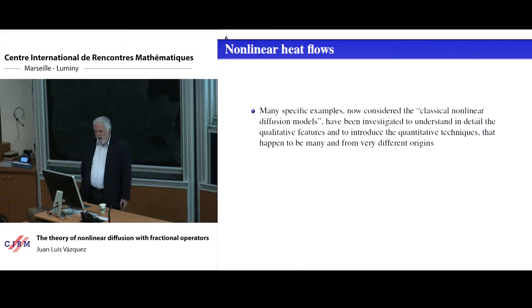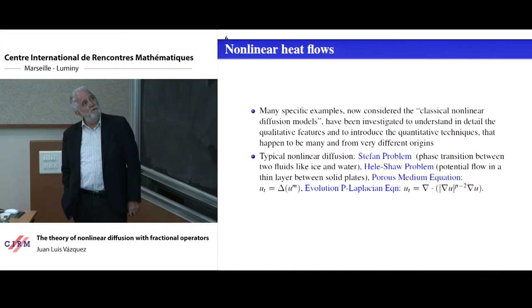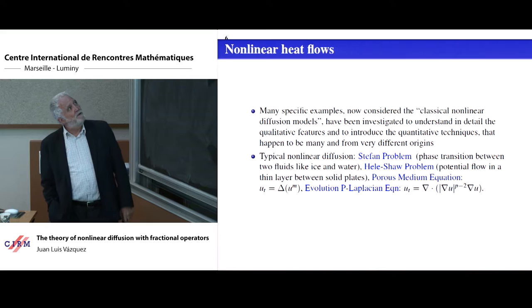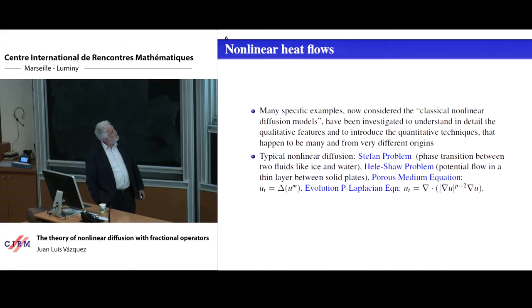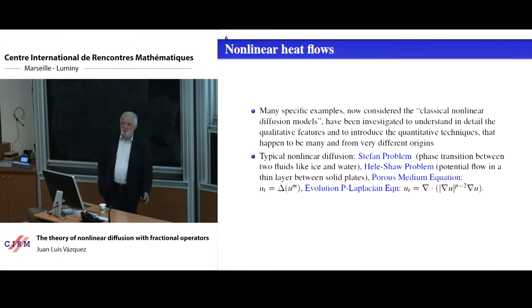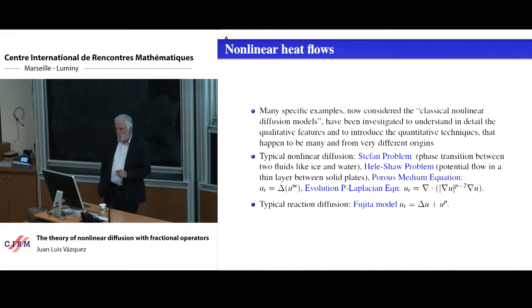Many of the specific nonlinear diffusion models now considered classical have been investigated for many years. The four important examples were: the Stefan problem — the phase transition between two fluids like ice and water with a free boundary; the Hele-Shaw problem, which is a potential flow in a thin layer between two solid plates; the Porous Medium equation; and the evolution P-Laplacian equation. These were the four equations on my desk for 20 years.